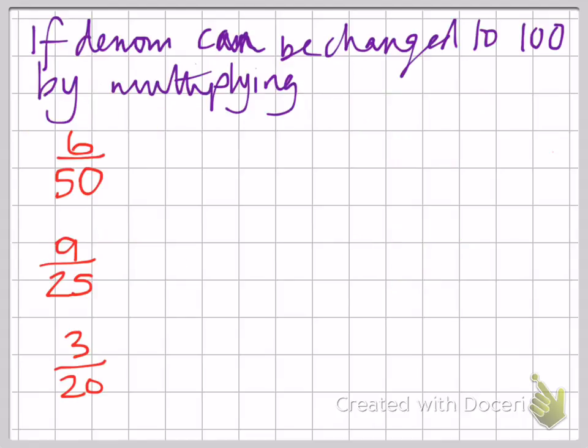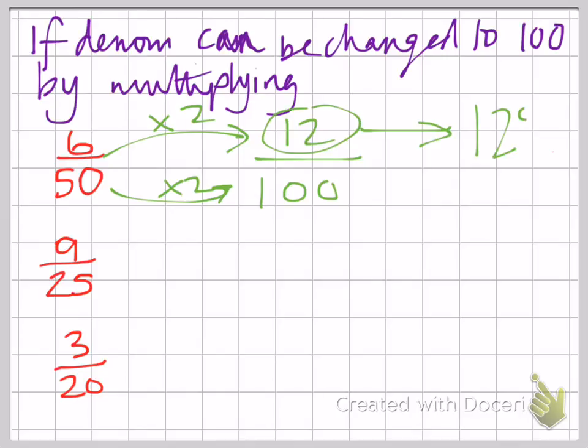You're more likely to get fractions like this where there isn't a 100 on the bottom. So your first step is to try and convert those fractions so they do have a 100 on the bottom. Here I can change the bottom into 100 by timesing by 2. Whatever you do to the bottom, you also do to the top. So on the top, I times by 2 and I get 12. Now my fraction is over 100. This becomes my percentage, 12%.